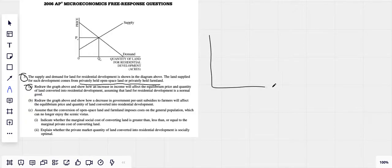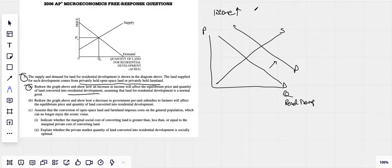So if income goes up, we could assume that the demand for residential developed land would increase. So this is the quantity of residential developed land. Demand increases because income goes up. We know income is a determinant of demand. Income goes up, demand has to increase. So we could see that as demand increases, we know the price of residential developed land and the quantity would therefore increase.